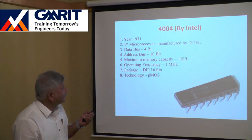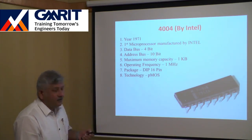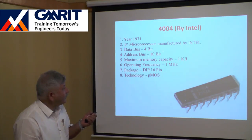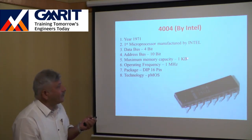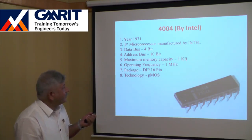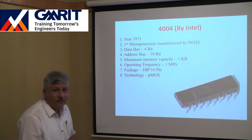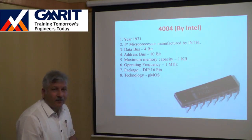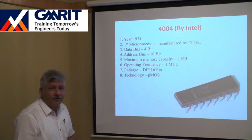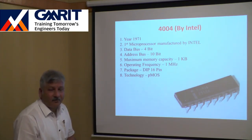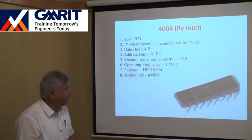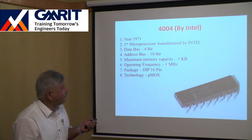The address bus of the 4004 was 10-bit, giving a maximum memory capacity of 1 KB. The operating frequency was 1 MHz — a clock signal was applied to synchronize all internal hardware of the processor, and the maximum clock frequency applicable to the 4004 was 1 MHz.